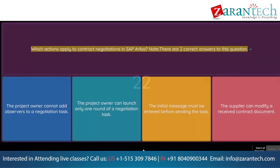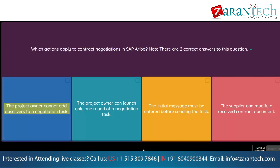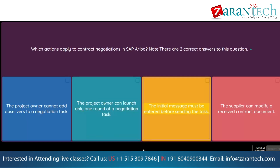Question: Which actions apply to contract negotiations in SAP Ariba? Note: there are two correct answers to this question. Option 1: The project owner cannot add observers to a negotiation task. Option 2: The project owner can launch only one round of a negotiation task. Option 3: The initial message must be entered before sending the task. Option 4: The supplier can modify a received contract document.